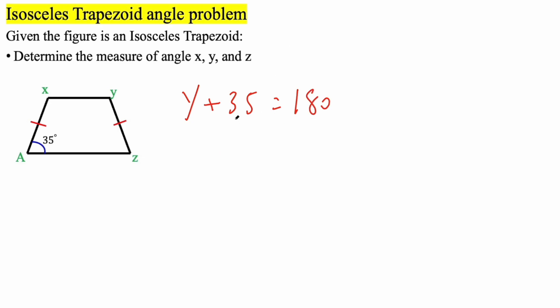And if you want to solve for the measure of angle Y, just subtract 35 on both sides. And so we have Y is equal to, we need to borrow the eight. So this will become seven, the zero becomes a 10. 10 minus five is five, seven minus three is four, and we get 145 degrees.